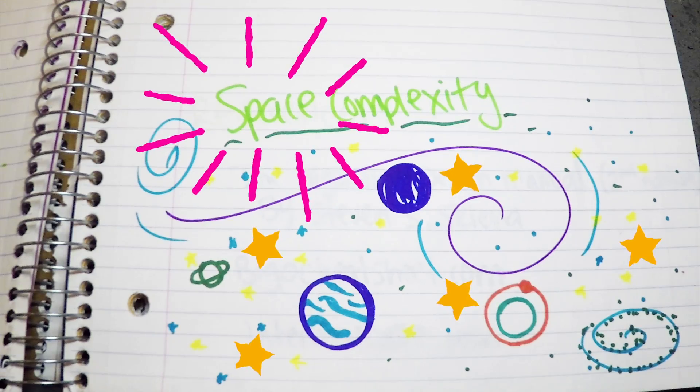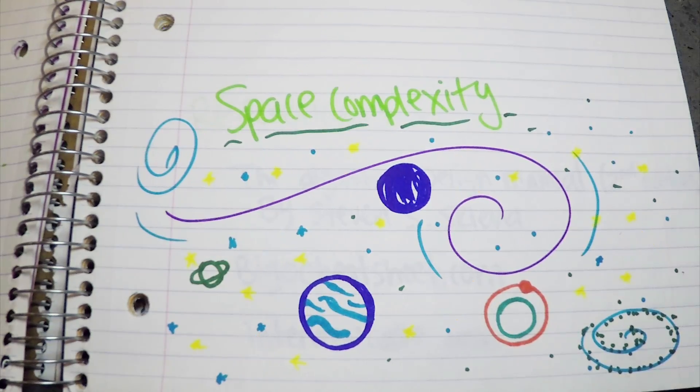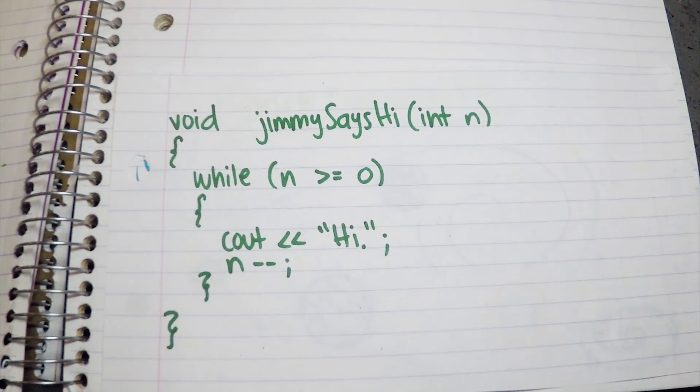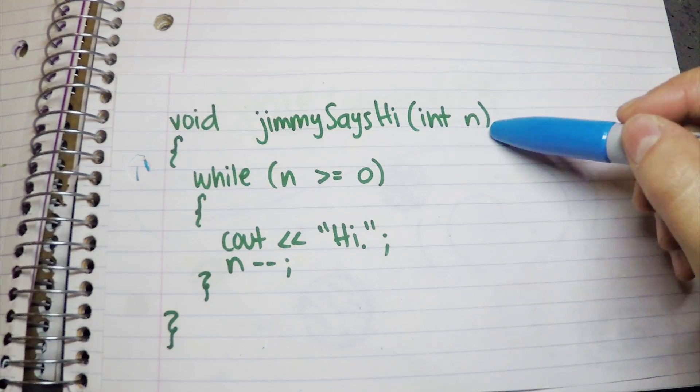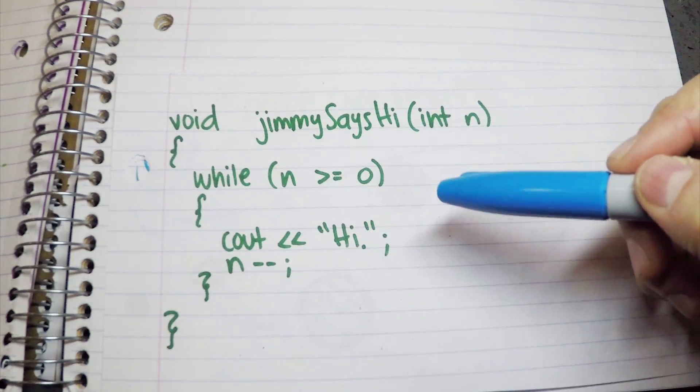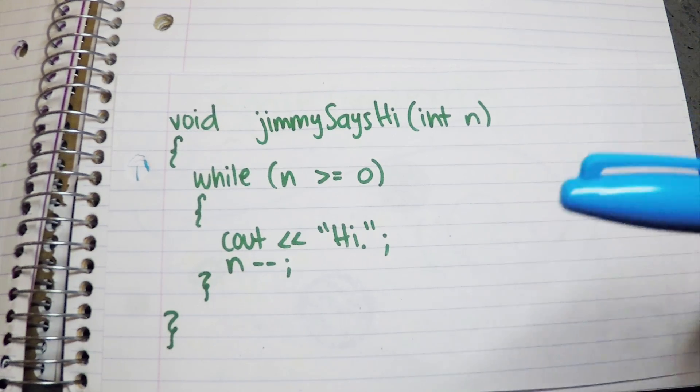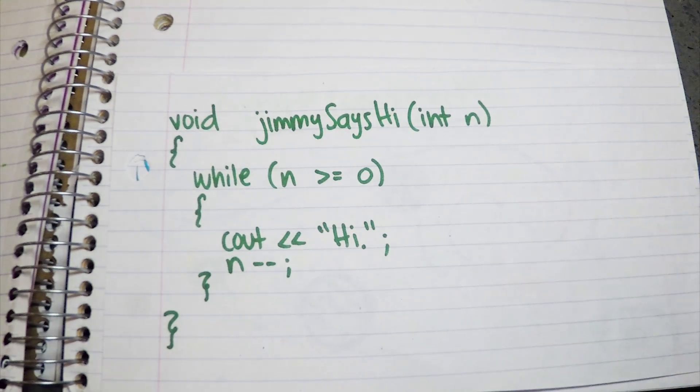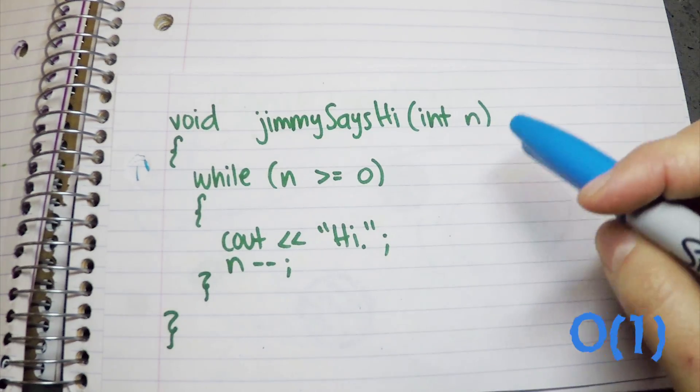Now let's talk about space complexity. Here we care about optimizing for less memory. In this function, we take a number, then we loop n times, and we'll run whatever n times we pass. The space complexity here, though, is O(1). And that's because we are not allocating a new variable.